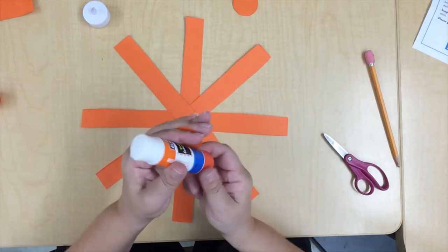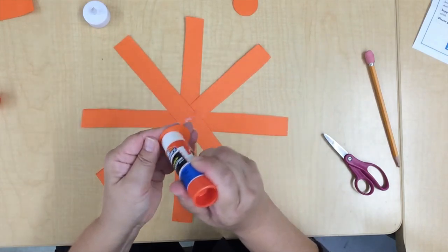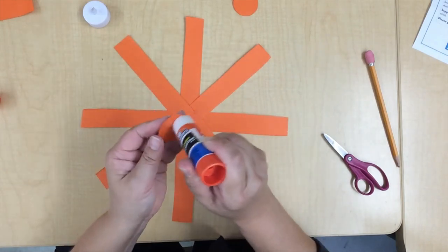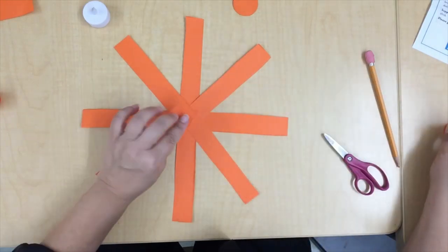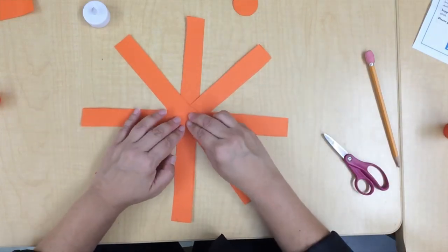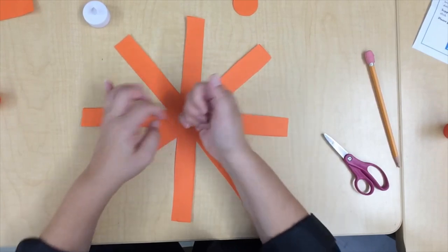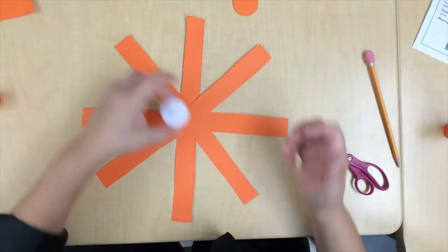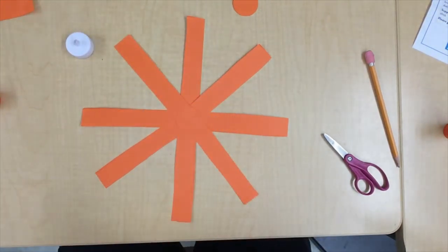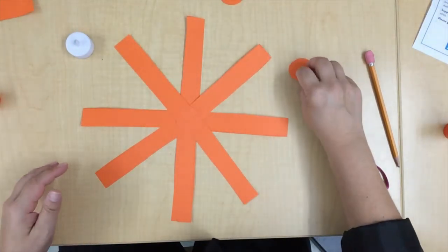We're going to take another circle, put some glue on the circle so we know that we're getting all the spots we need to get, and glue that down. That's going to be the space for your candle if you decide to put it in.